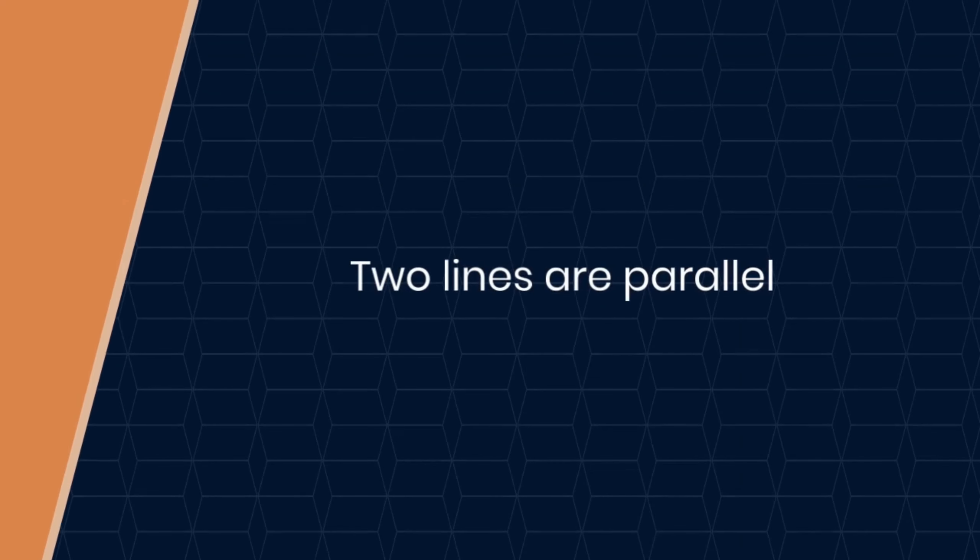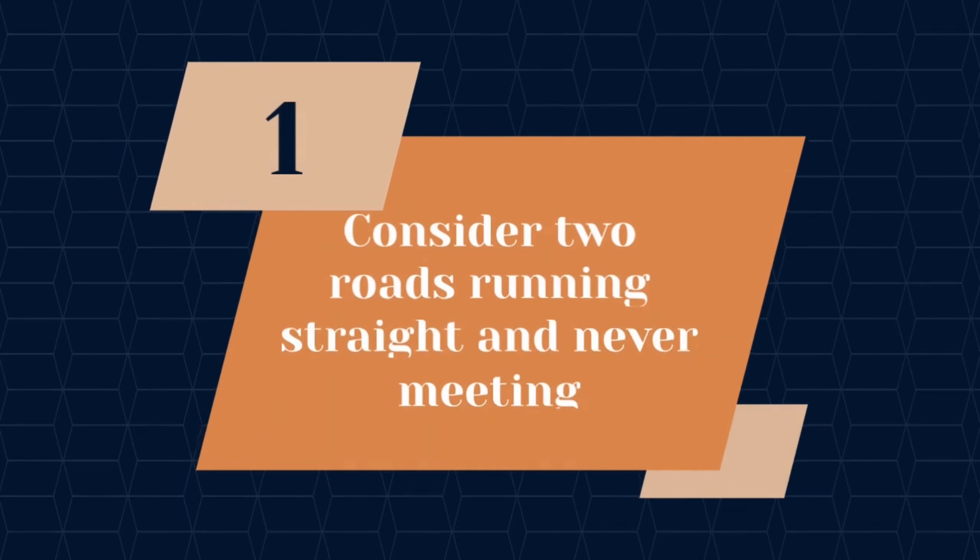Parallel Lines — Formula: Two lines are parallel if their slopes are equal: M1 = M2.